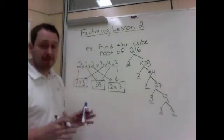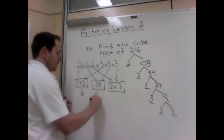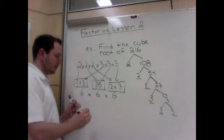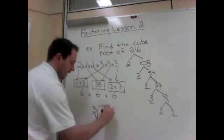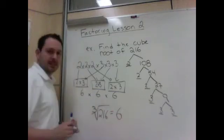However, if it asked to find the cube root, I would now need to find what these groups are. 6 times 6 times 6. So the cube root, the symbol for cube root again, is a square root with a 3 in the notch, equals 6.